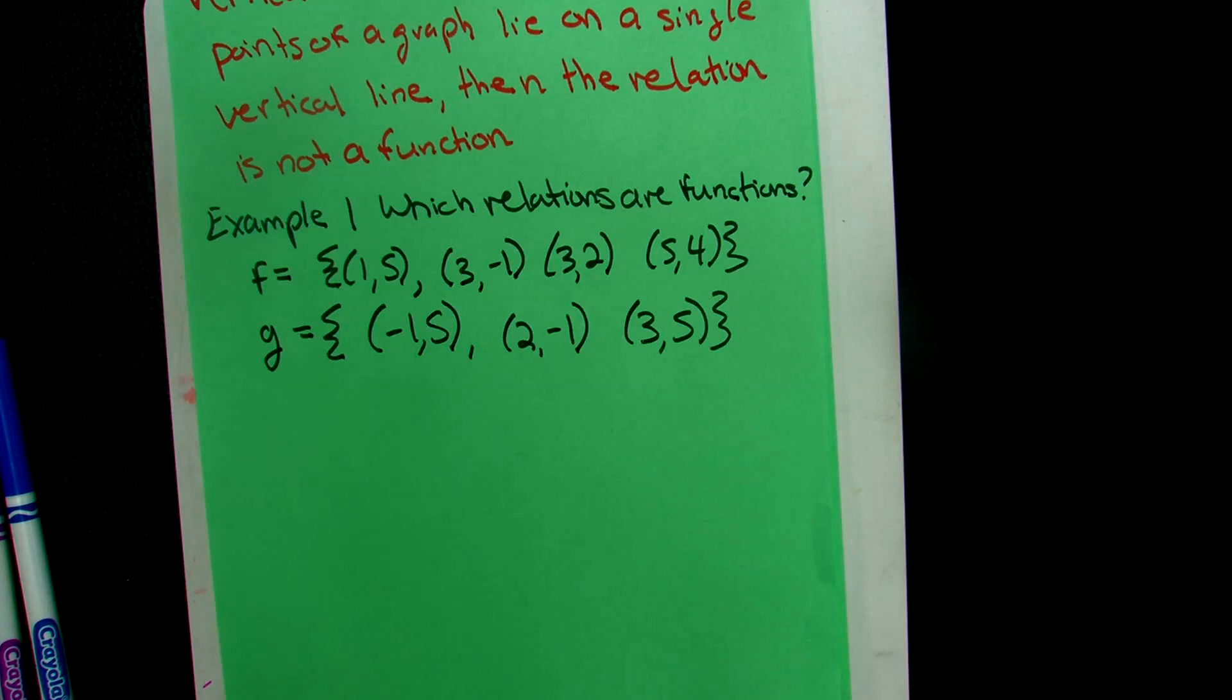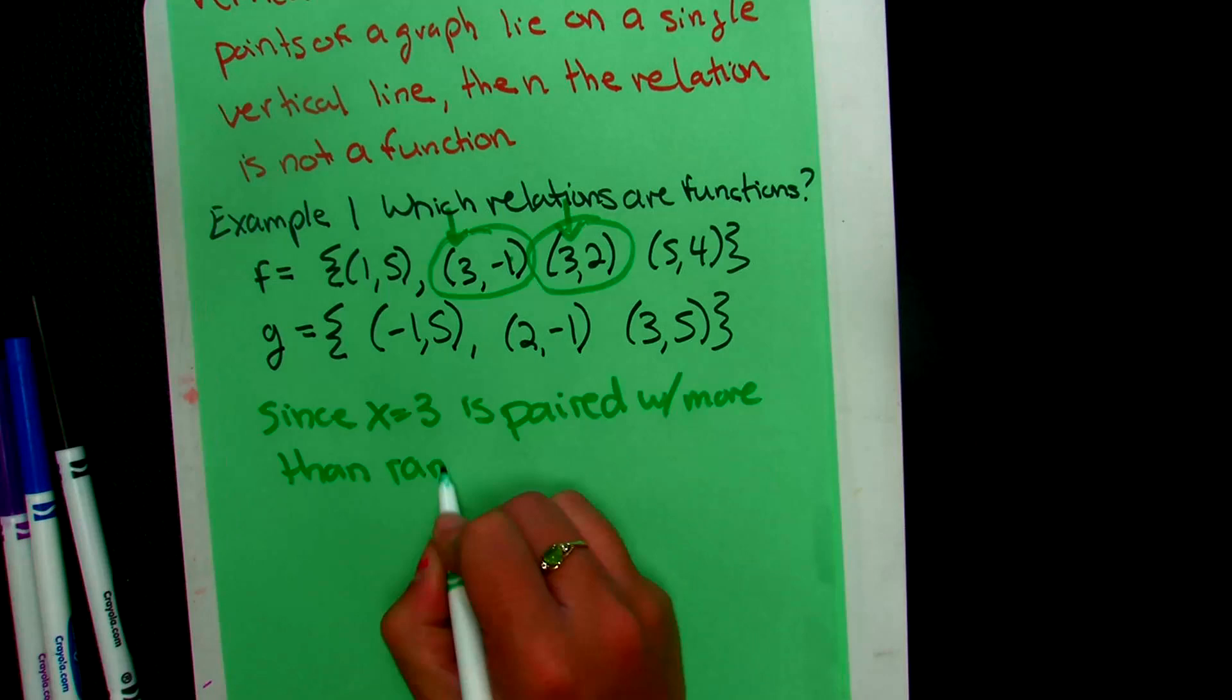But you might say, well, look at relation G. Relation G repeats its 5, right? We've got a 5 here and a 5 here. Well, that's okay because those are both range. The domain never repeated itself. So relation G is a function. It's okay to repeat your range. You just can't repeat your X.